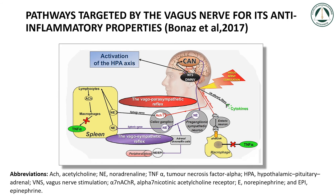Here we can see the pathways targeted by the vagus nerve for its anti-inflammatory properties, according to Bonaz et al. 2017. Many studies are showing similar results of vagus nerve stimulation: Condor et al. 2018, Kumar et al. 2019, McAllister-Williams et al. 2020, Nola et al. 2019, Payne et al. 2019, Butt et al. 2020.